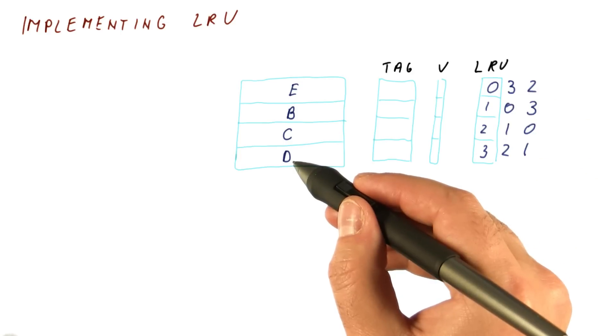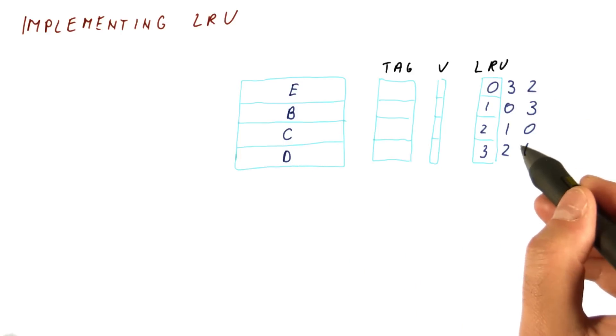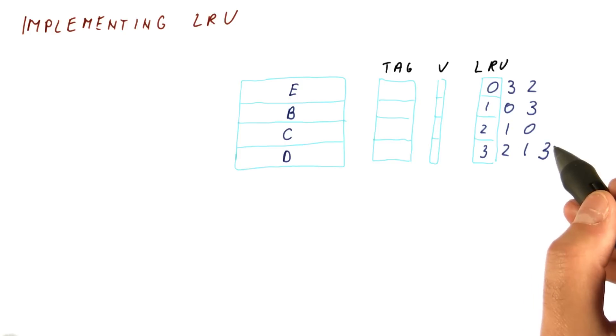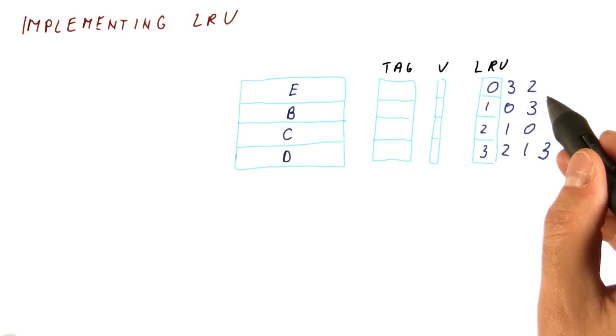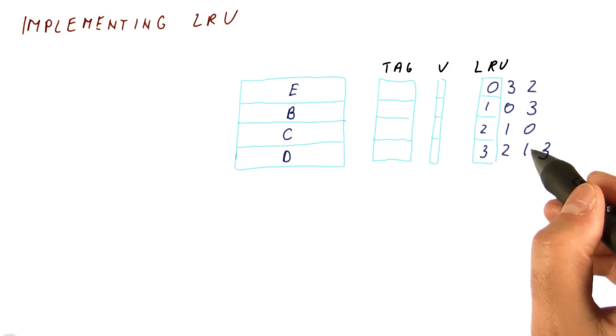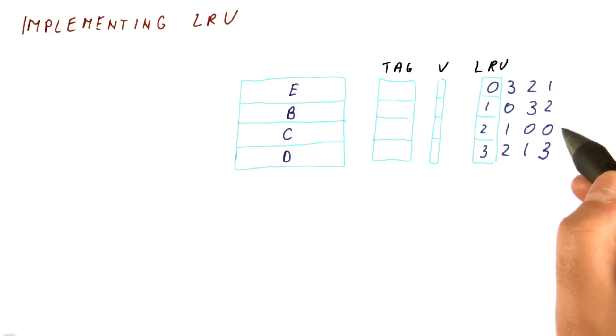What happens if block D, which is neither the most nor the least recent, is accessed? Well, this counter needs to become 3. And now we have an interesting situation. We don't just lower all the other counters a notch down. We take the ones that were above the original value of this counter. So we take the counters that are above 1, and those are the ones that get a notch down. But the ones that are below 1 stay the same. That ensures the counters still have different values.